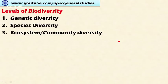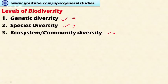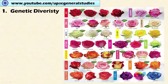Let's look at the levels of biodiversity. Biodiversity is considered to exist at three levels: at the genetic level, which concerns the genetic makeup of the organism; at the species level; and at the ecosystem or community level, which is the broader level of biodiversity.